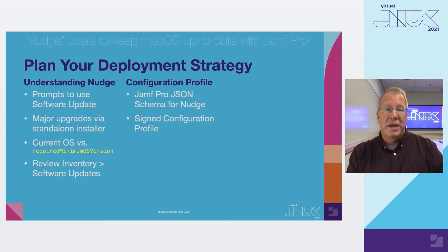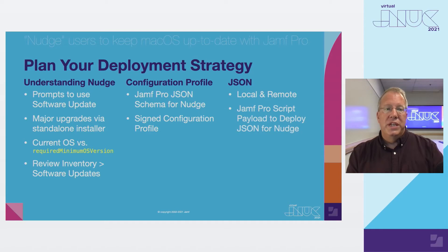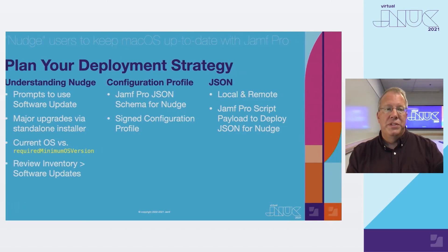We have a demo coming up. If you deploy a standard configuration profile, it must be signed or it will be modified by Jamf Pro. The GitHub Wiki includes links with detailed information. Nudge has support for both local and remote JSON. By default, Nudge will look for JSON located in library preferences. Additionally, you can use the Jamf Pro script payload to deploy JSON for Nudge. To help you determine your deployment strategy, let's look at configuration methods.